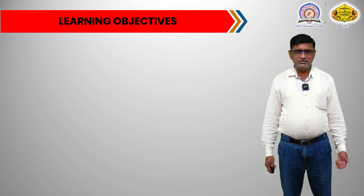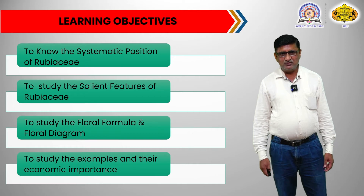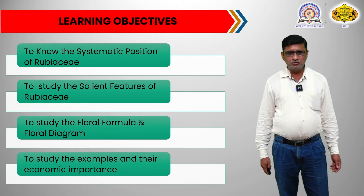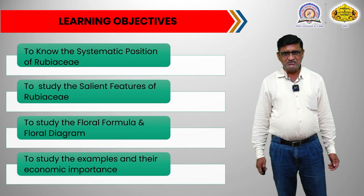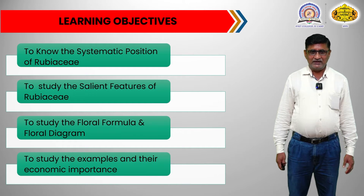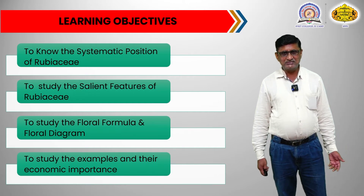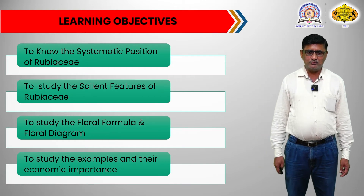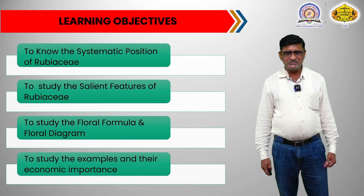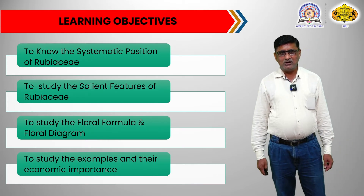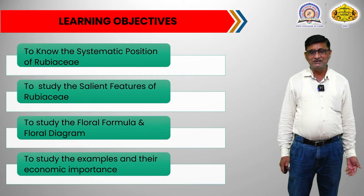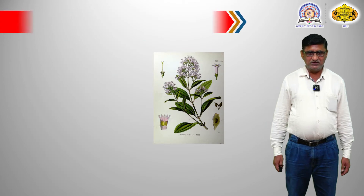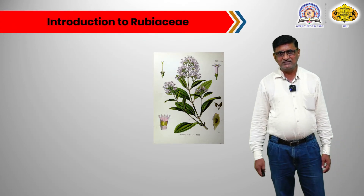This is our today's agenda. The learning objectives of the study of family Rubiaceae are: after studying the family Rubiaceae, we will come to know the systematic position of Rubiaceae in the classification system — where exactly Rubiaceae is placed. We will also come to know the salient features of the family Rubiaceae. The objective is also to study the floral formula and floral diagram of Rubiaceae, and lastly to study some examples along with their economic importance.